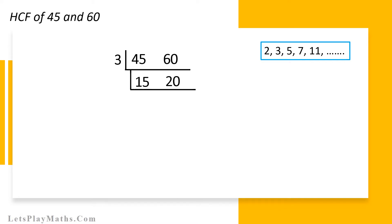Right now, we have 15 and 20 with us. We have to find out the lowest prime number that will divide both 15 and 20. As we can see, both 15 and 20 cannot be divided by 2 or 3, but they can be divided by 5. So let's consider number 5 as the lowest prime number. Now, divide both 15 and 20 by number 5. We will get results 3 and 4 respectively as shown here. Now we have numbers 3 and 4, but both cannot be divided by any prime number, so we stop the process here.